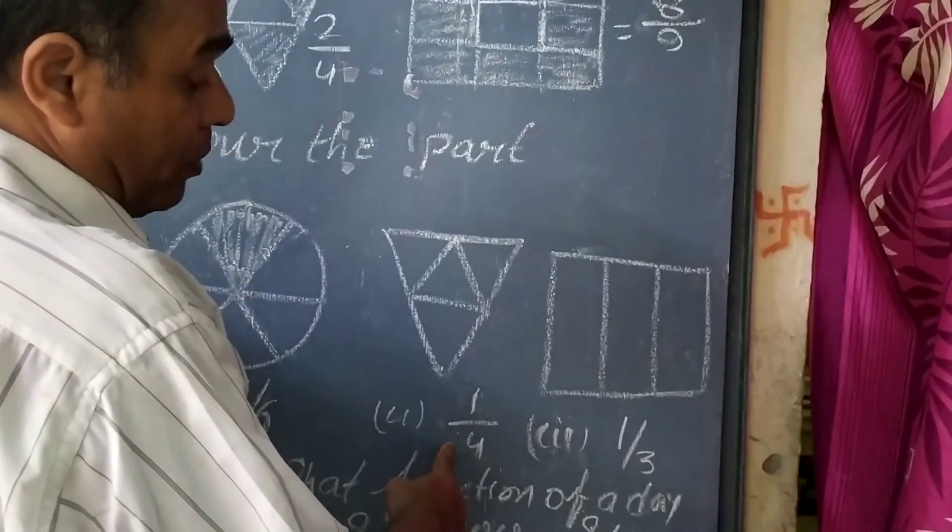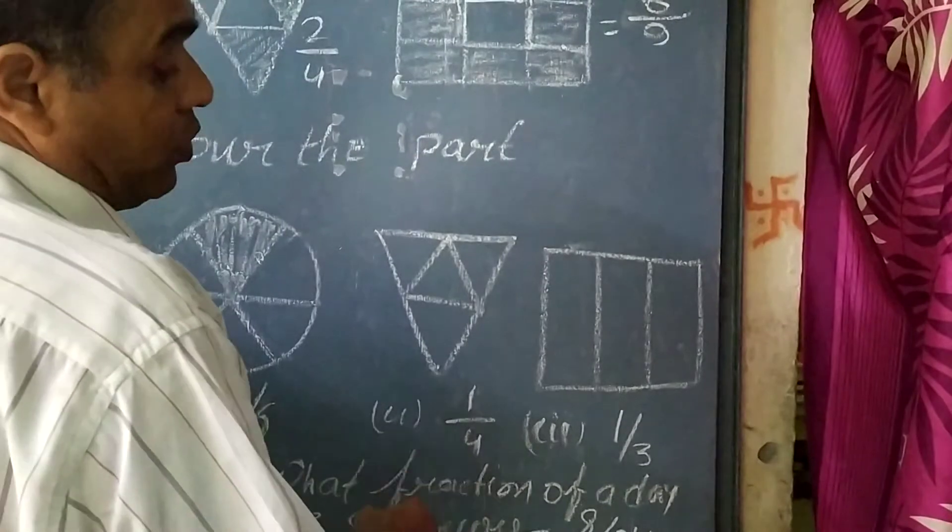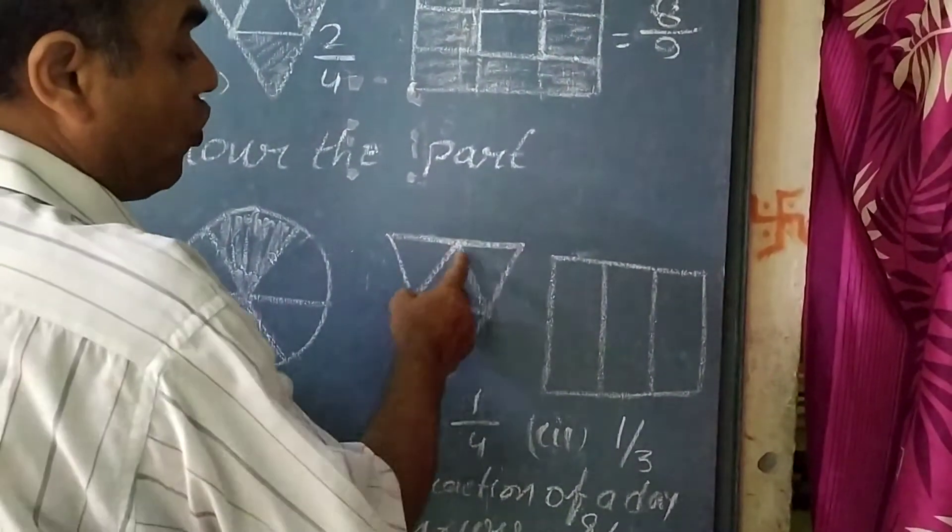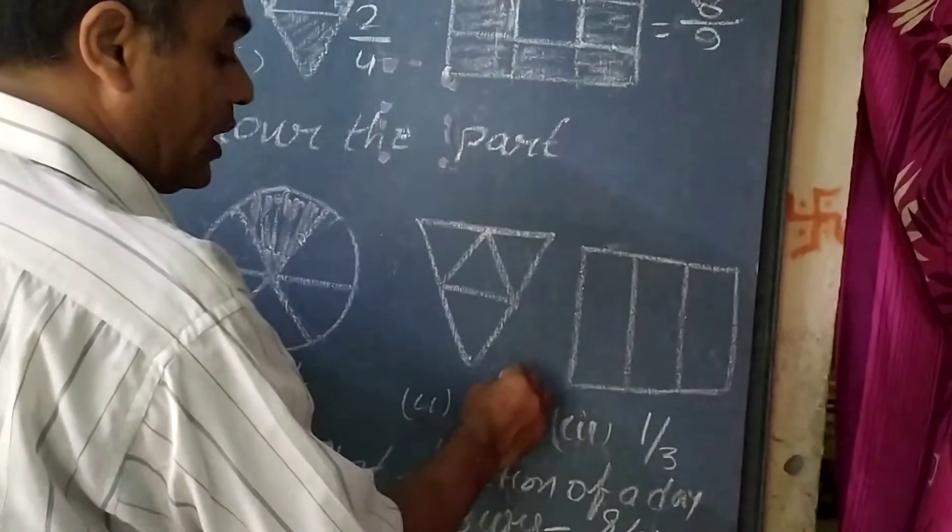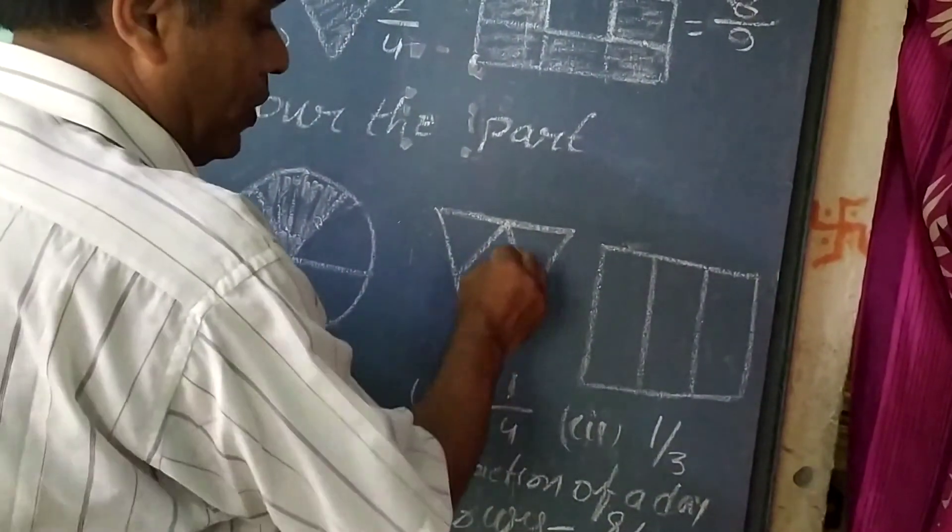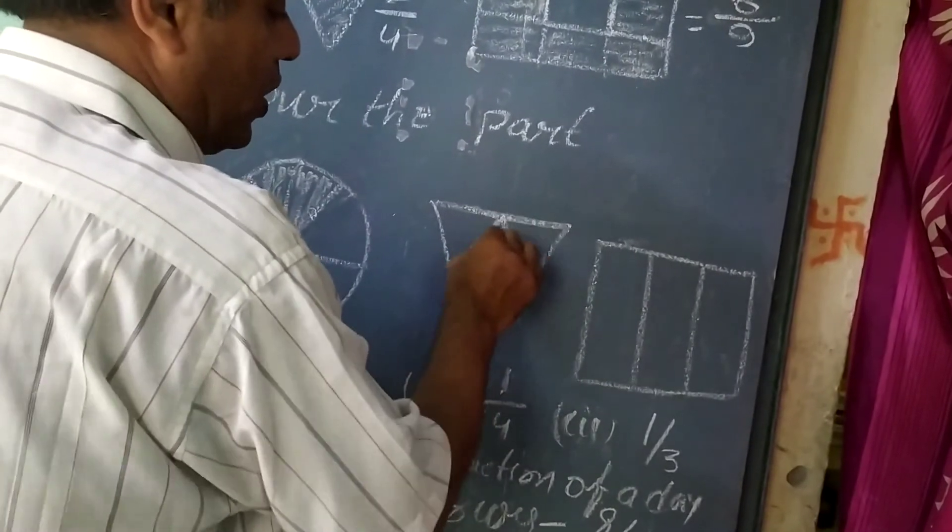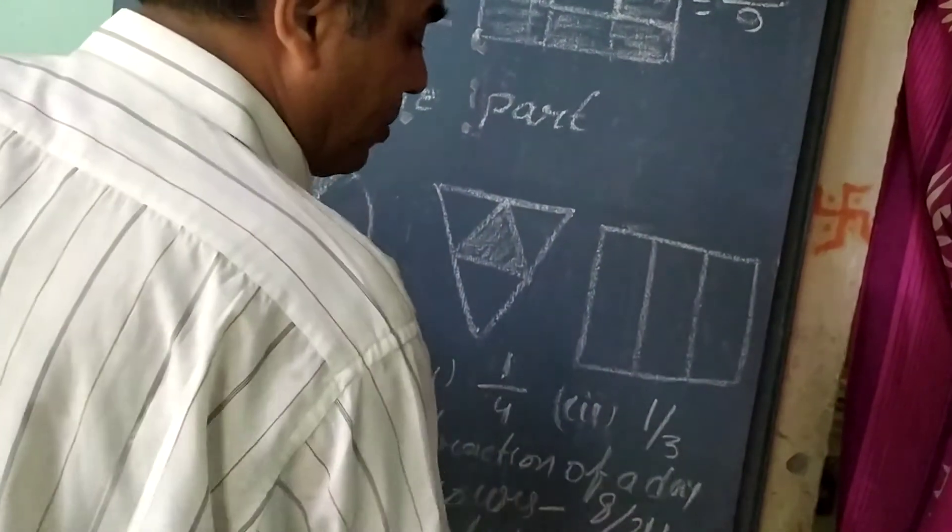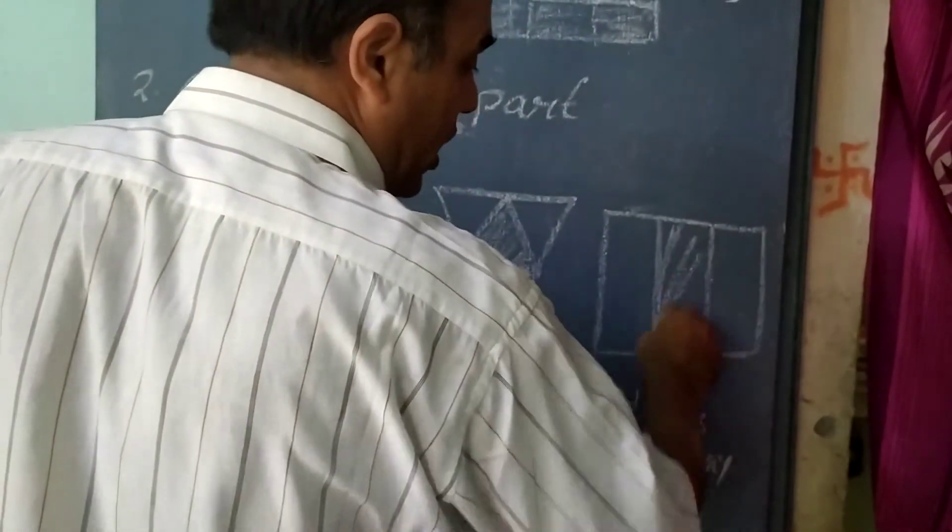Similarly, we have to color 1 by 4 of this triangle. There are 4 triangles in the denominator. We have to shade 1 triangle. Similarly, we have to shade 1 by 3. This portion is 1 by 3.